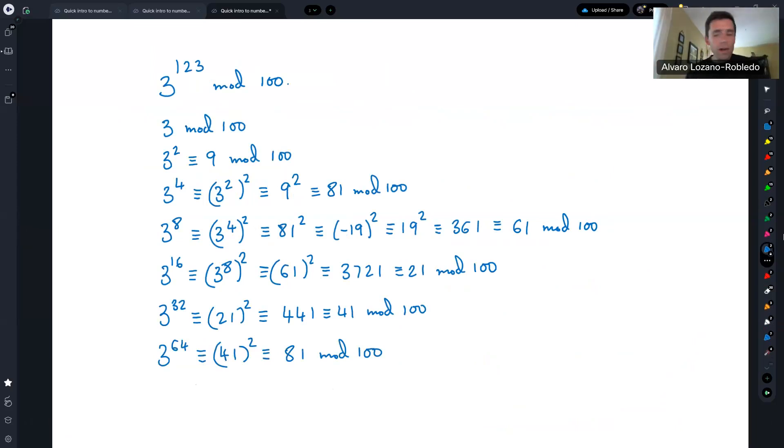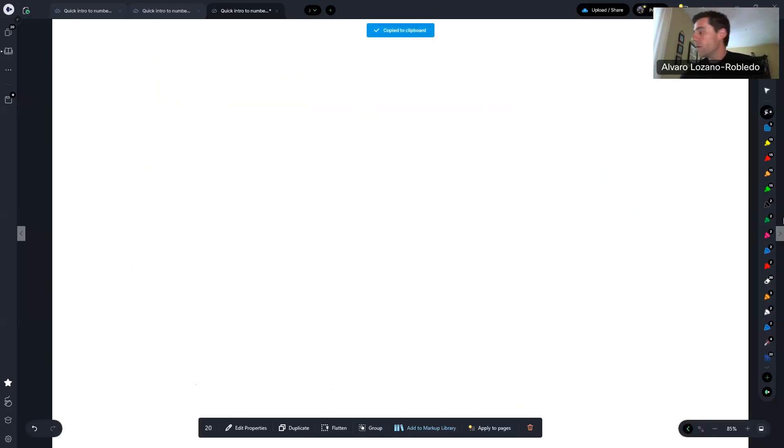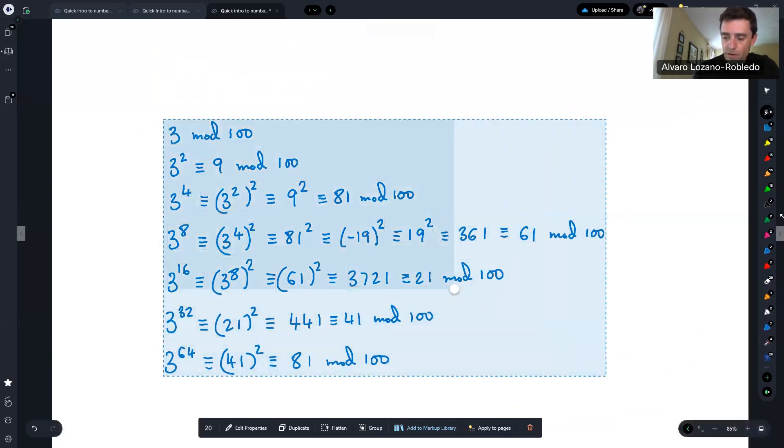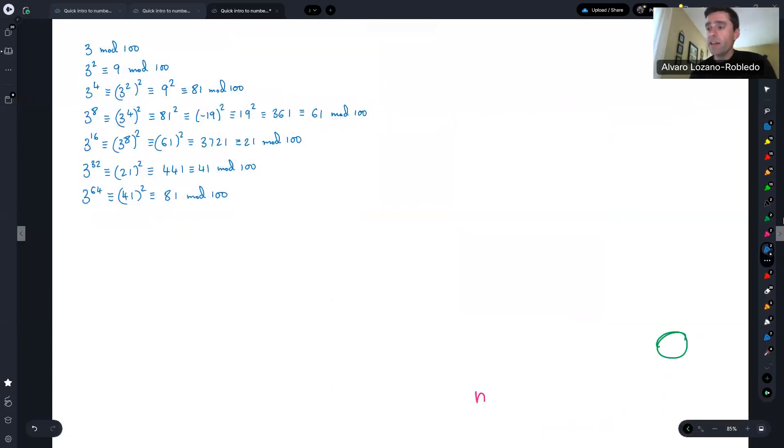And now I'm already using the properties and the very powerful properties of congruences. 3 to the 32 is already pretty big. But I just have to compute 21 squared. 21 squared is just 441. And that's 41 modulo 100. And 3 to the 64 is 41 squared, which is 81 modulo 100. Okay. So why am I doing all this when I want to actually compute this one? Well, I'm getting closer, but that doesn't seem to be converging to what I actually want, my answer. So let me lasso all of this and bring it to the next page with me. Okay. So put it up here as information that we're going to use. All right. So now how does this help me? What it helps me is that 123 is if I write it in binary expansion, if I write it as a sum of powers of two, it is actually 64 plus 32 plus 16 plus 8 plus 2 plus 1.